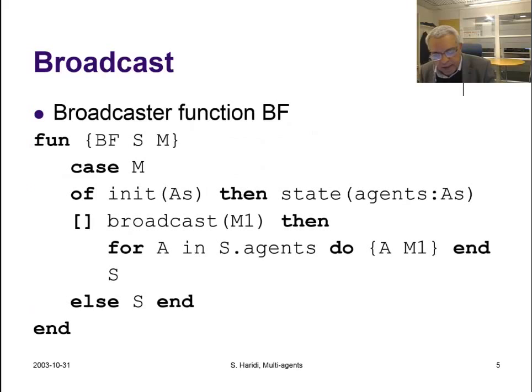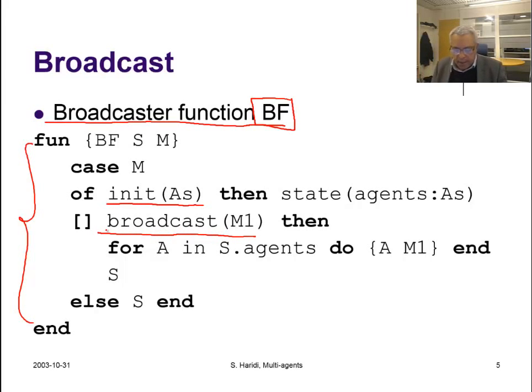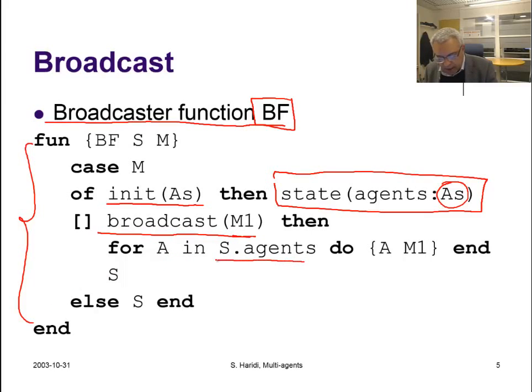The first thing to do is to define the broadcaster transition function. We call it BF. Here is a broadcaster transition function. It can accept two messages: an init message and a broadcast message. An init message basically changes the set of agents that this broadcaster knows about. So the state of the agent consists of one single field, and that field has the agents that it knows about. It can also get a broadcast message. This message is M here, and what it does, for every agent in its set of agents it knows about, it sends the message to the broadcaster. This is a state transition function. The state is not changed here, and it will ignore all other messages. That's why we have this else statement.